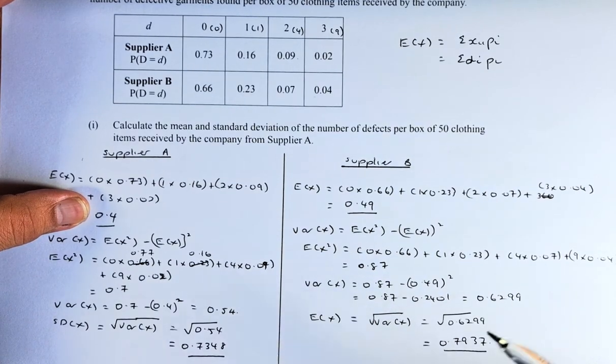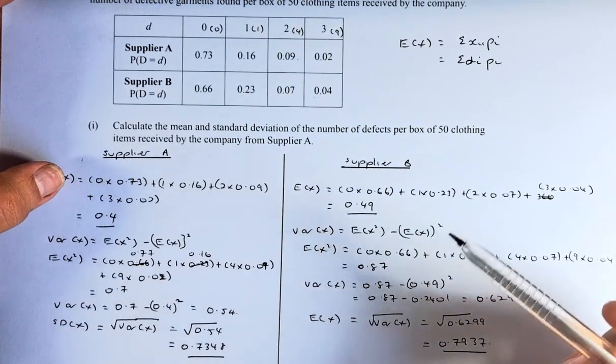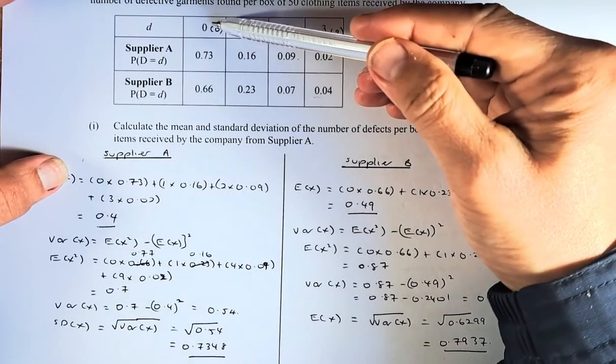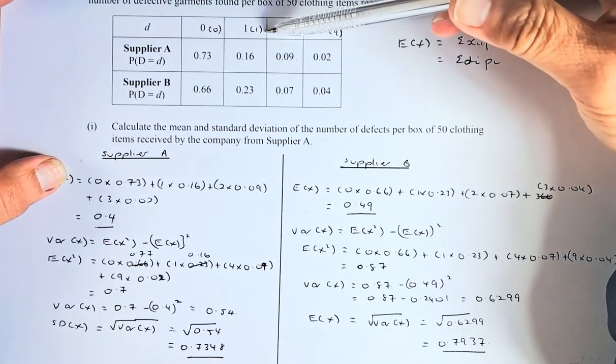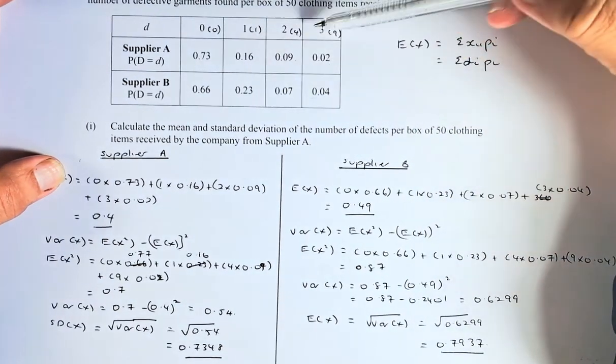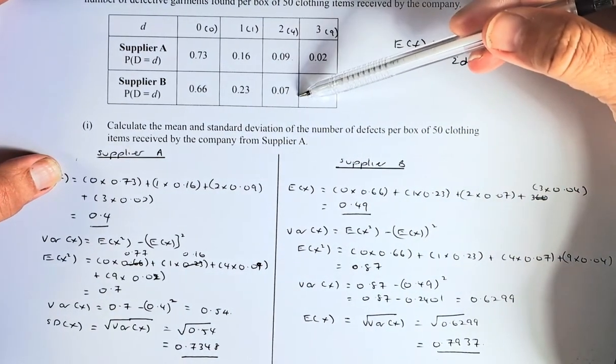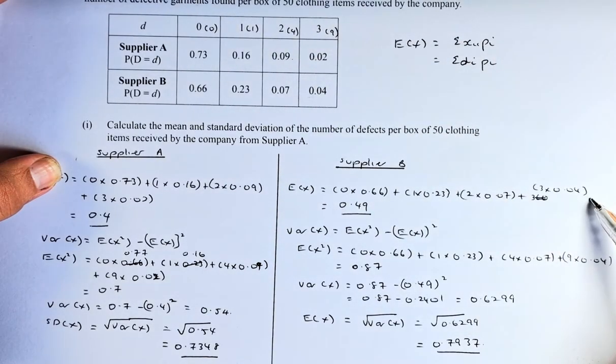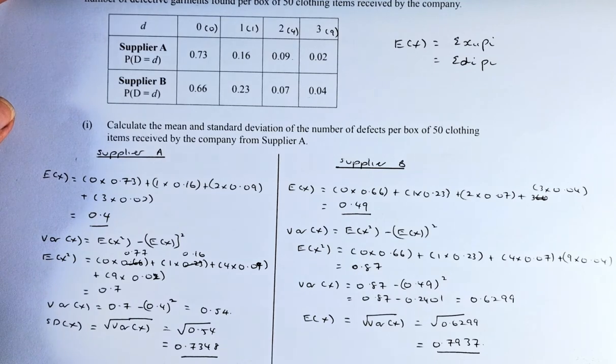Similarly, to calculate for Supplier B is the same. Now we have to use sum. So D times 0.66 plus 1 times 0.23 plus 2 times 0.07 and 3 multiplied by 0.04, and the answer is 0.49.